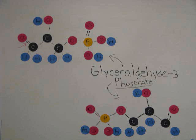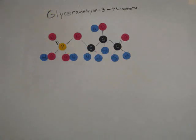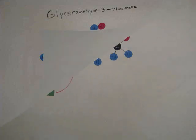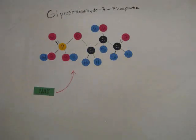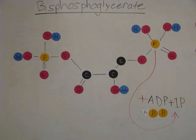From this point forward, two G3Ps go through the rest of the cycle parallel to one another. For the sake of simplicity, we're just going to follow one of these molecules. First, the G3P loses a hydrogen and two electrons to energy carrier NAD+, turning it into higher energy NADH. This NADH will go to the electron transport chain, which we'll talk about later. Then it gains an inorganic phosphate, turned into 1,3-biphosphoglycerate.